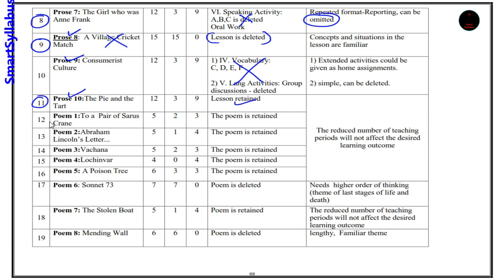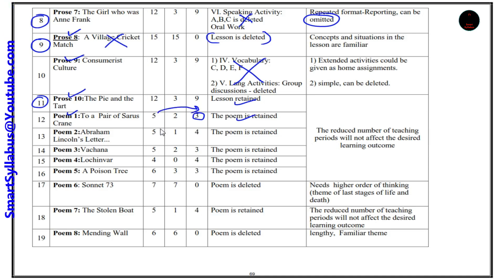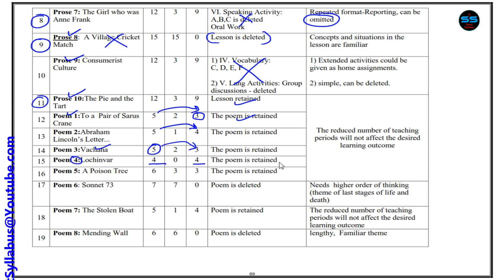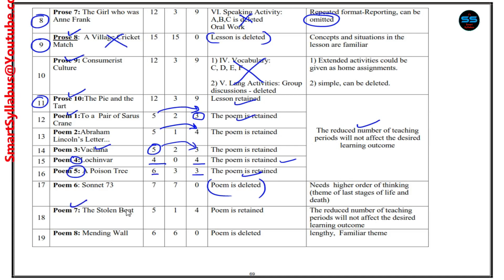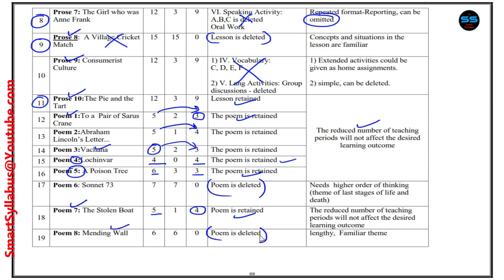Coming to the poem part: Poem 1 — 'To a Pair of Sour Screens' — is retained, just reduced from 5 to 3 periods. Poem 2 — 'Abraham Lincoln's Letter' — reduced from 5 to 4 periods. Poem 3 — 'Vachana' — periods are reduced. Poem 4 — periods are not reduced, retained as is. Poem 5 — 'The Poison Tree' — retained with reduced periods. Poem 6 — 'Sonnet 73' — is completely deleted; it requires higher order of thinking, which is the reason provided for deletion. Poem 7 — 'The Stolen Boat' — retained with reduced periods. Poem 8 — 'Mending Wall' — is entirely deleted; you are not going to study this poem this year.